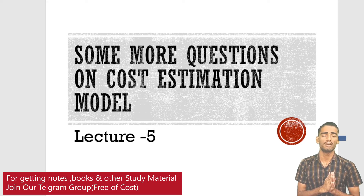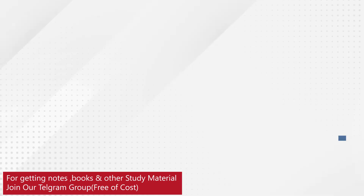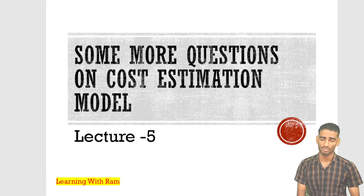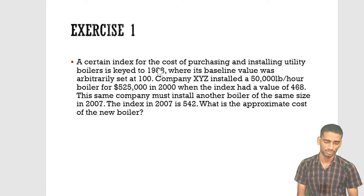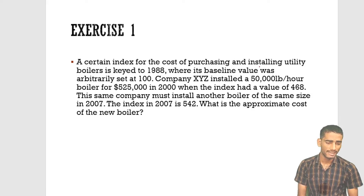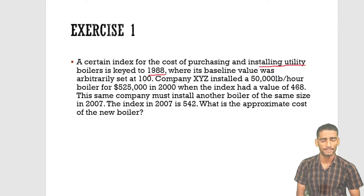Without wasting time, let us start. Exercise one: a certain index of the cost of purchasing and installing a utility boiler is keyed to 1998, where its baseline value was arbitrarily set to 100.